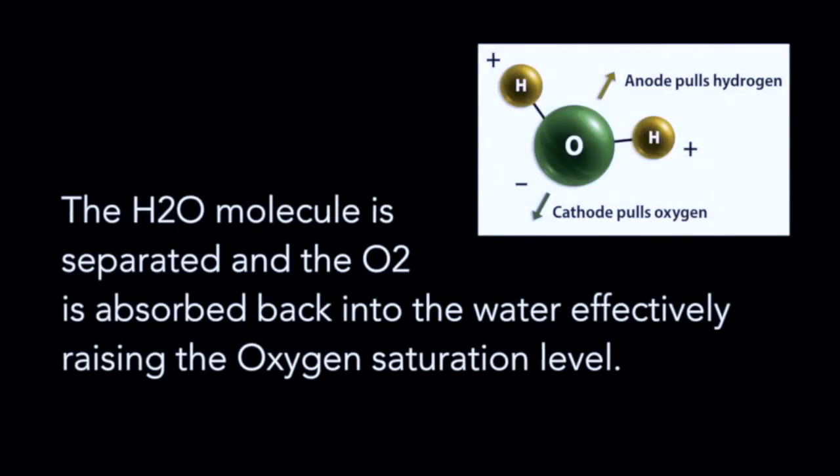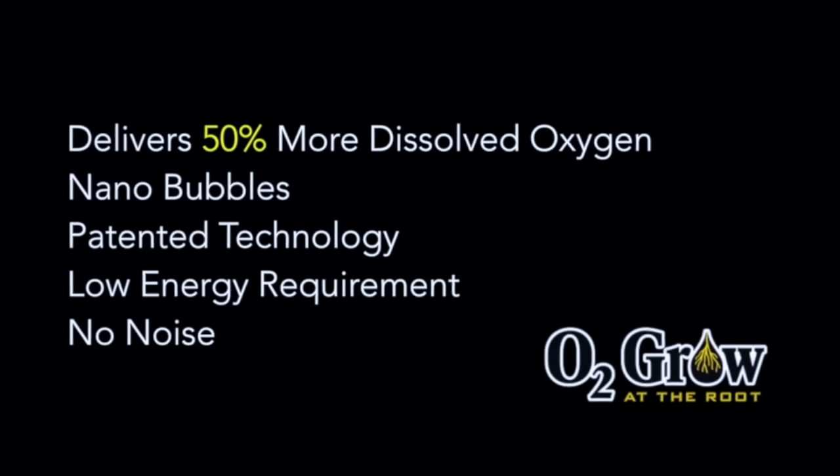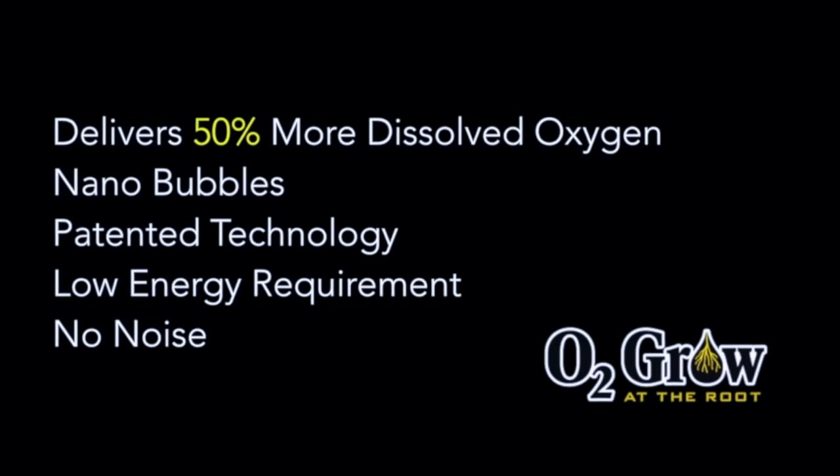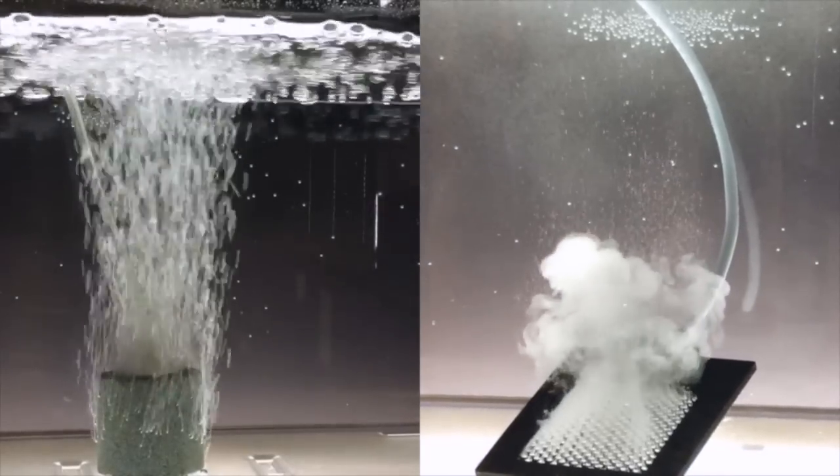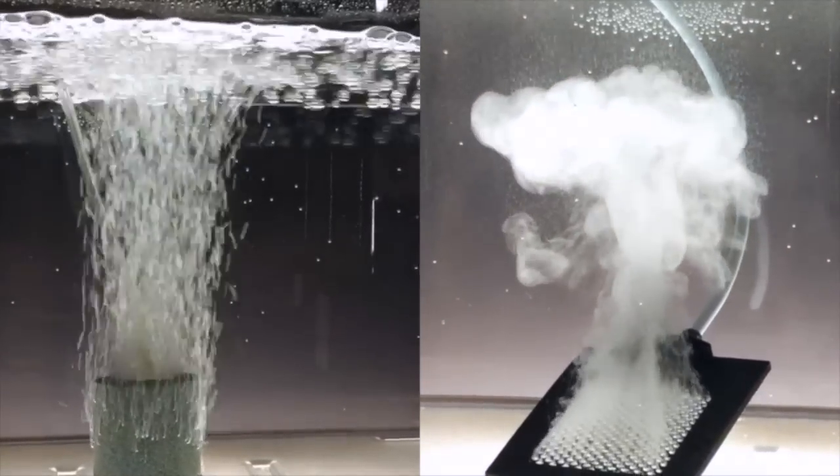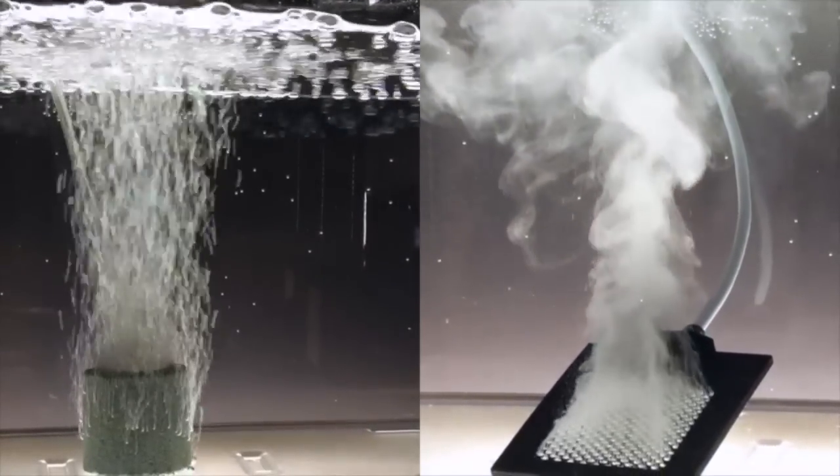The hydrogen gas molecule, being lighter than an oxygen molecule, quickly rises to the surface and escapes back into the air, and the pure 100% oxygen molecule called a nano bubble are so small they cannot break the surface and therefore get re-dissolved, raising the dissolved oxygen level 50% more than what bubblers can achieve.